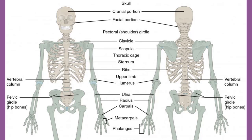The second subdivision of the skeletal system is the appendicular skeleton, which includes all the bones of the upper and lower limbs, plus the bones that attach each limb to the axial skeleton. There are 126 bones in the appendicular skeleton of an adult.